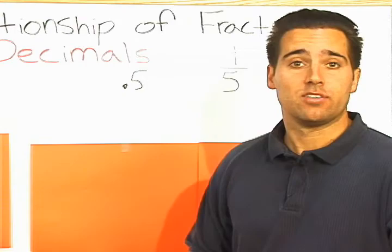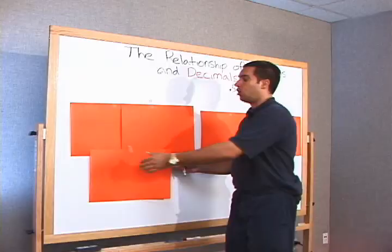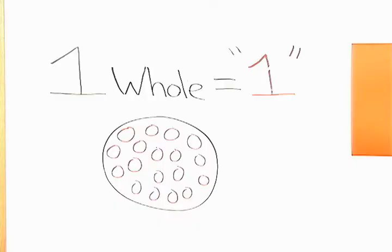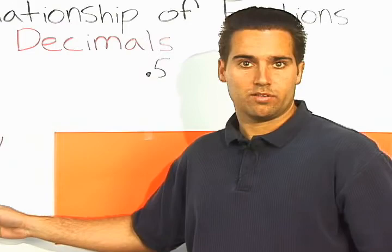To do that, the first thing we have to do is find out what a whole is. One, the number one, a whole. One whole is equal to one.